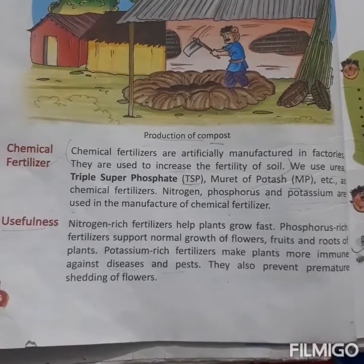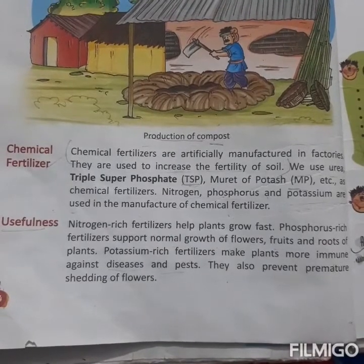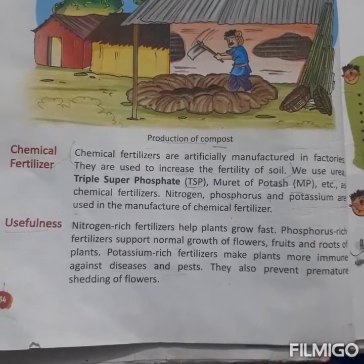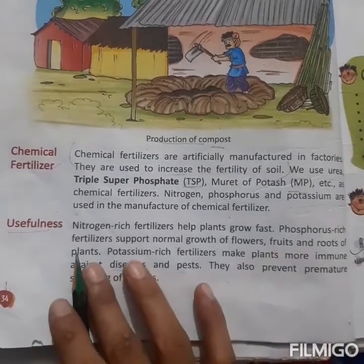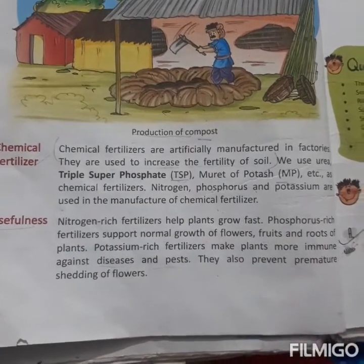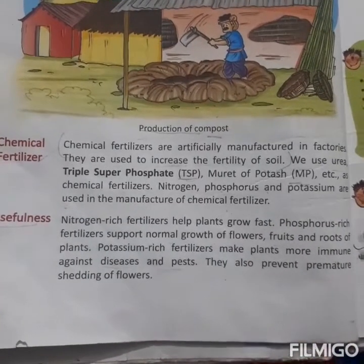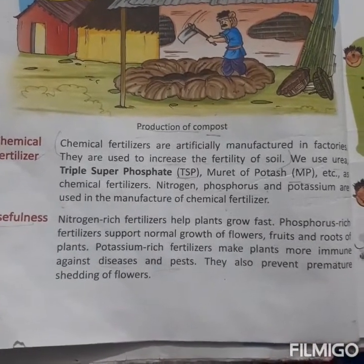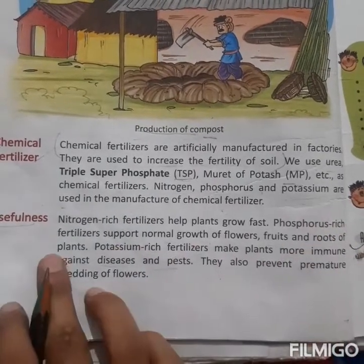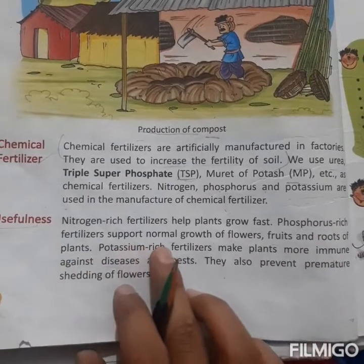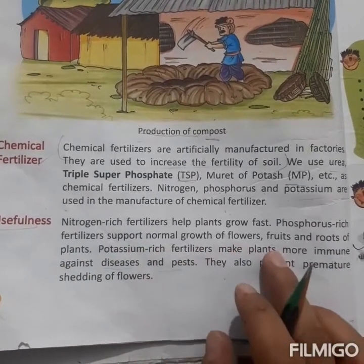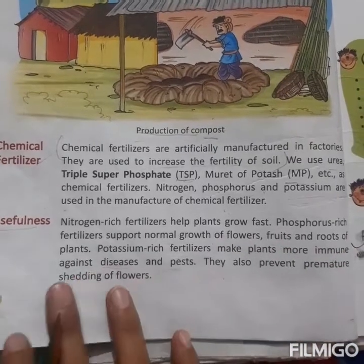First, nitrogen-rich fertilizer helps plants grow fast. Second, phosphorus-rich fertilizer supports the normal growth of flowers, fruits, roots, and plants.